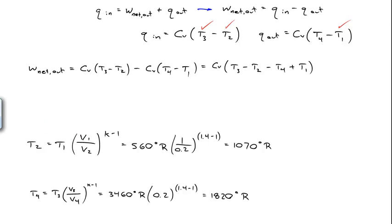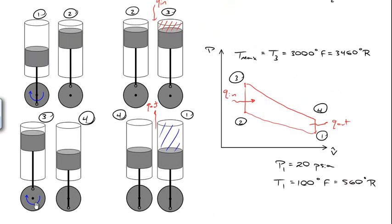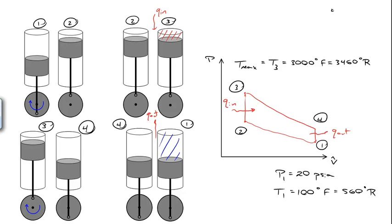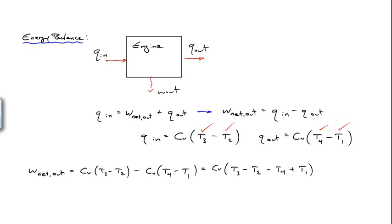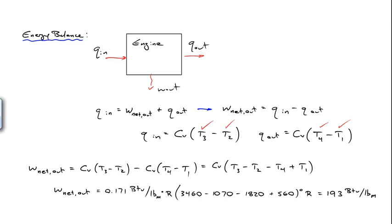The ratio used in those calculations — the value of 0.2 — comes from the fact that the volume at state two is only 20% of the volume at state one, as specified in the problem. So V2 equals 0.2 times V1, and that ratio of 0.2 appears in the isentropic expressions. Now that we know all four temperatures, substituting into the Q_in and Q_out expressions and computing W_net equals Q_in minus Q_out gives a net work output of 193 BTU per pound-mass of gas in the cylinder.